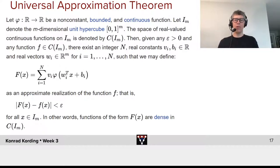And now, let I_m be the m-dimensional unit hypercube. It doesn't matter. It just says the function we want it to be good within some interval, and we can just arbitrarily choose that we want it to be the unit hypercube. The space of real-valued continuous functions on I_m is denoted by C(I_m). Now, that's the space of all possible functions that could be in that cube.